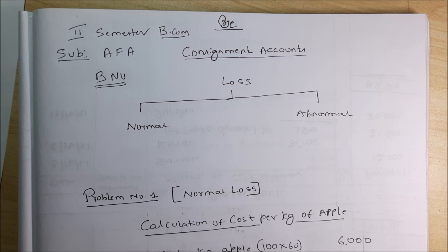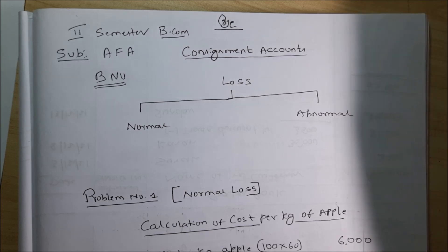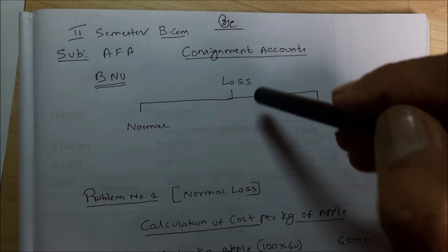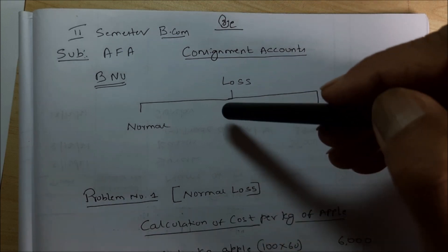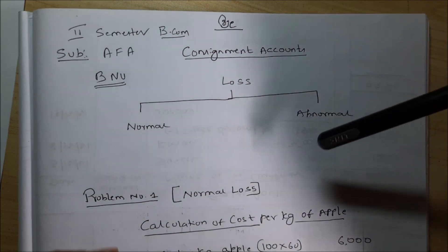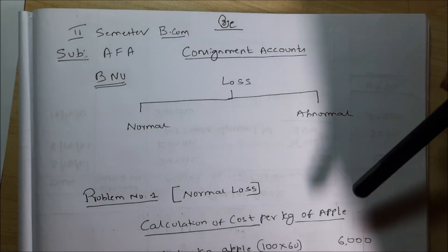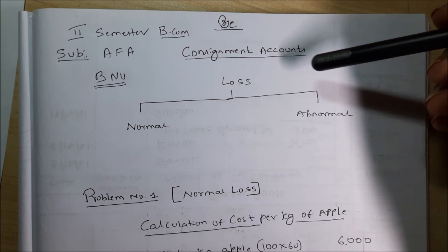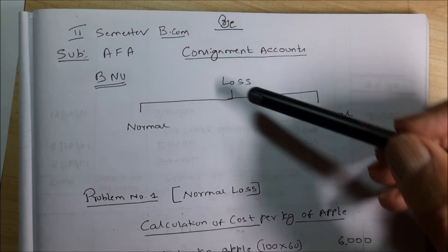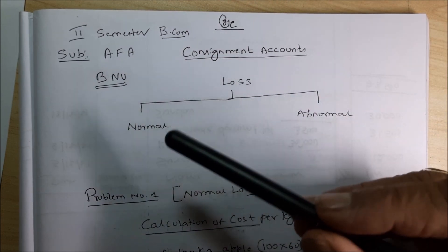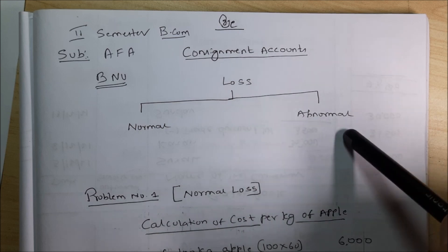We have dealt with different types of losses. We will continue with that and work out a few problems on losses — how to find out the value of stock on those losses. Losses can be classified into normal and abnormal.